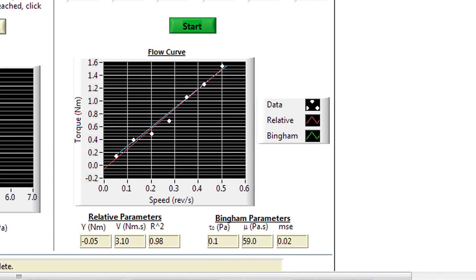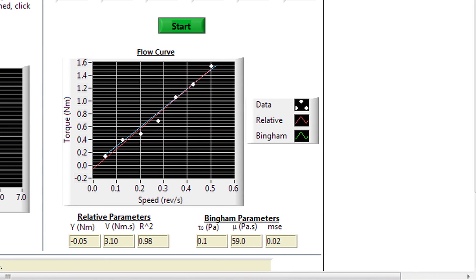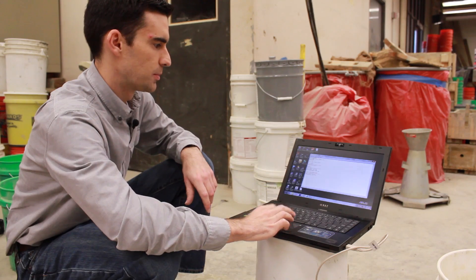And the last value, MSE, is the mean squared error. That number should be as close to zero as possible. 0.02 here is an excellent fit. As I mentioned before, the software writes a summary file.